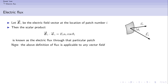One thing to note is that this definition of flux is applicable to any vector field, not just the electric field. For instance, if I have a magnetic field crossing some area, the dot product of the magnetic field with the area vector gives us a magnetic flux. Or if I have a liquid flowing and take an imaginary patch through which the liquid passes with a certain velocity, the dot product of the velocity with the area vector gives the velocity flux. So this definition is applicable to any vector field.